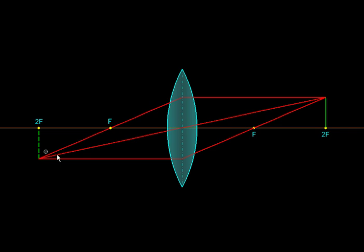Over here, the image that we are getting is on the opposite side of the lens as compared to the object. It is inverted, upside down, as compared to the object. It is of the same size. This is a very special case, and its nature is real.